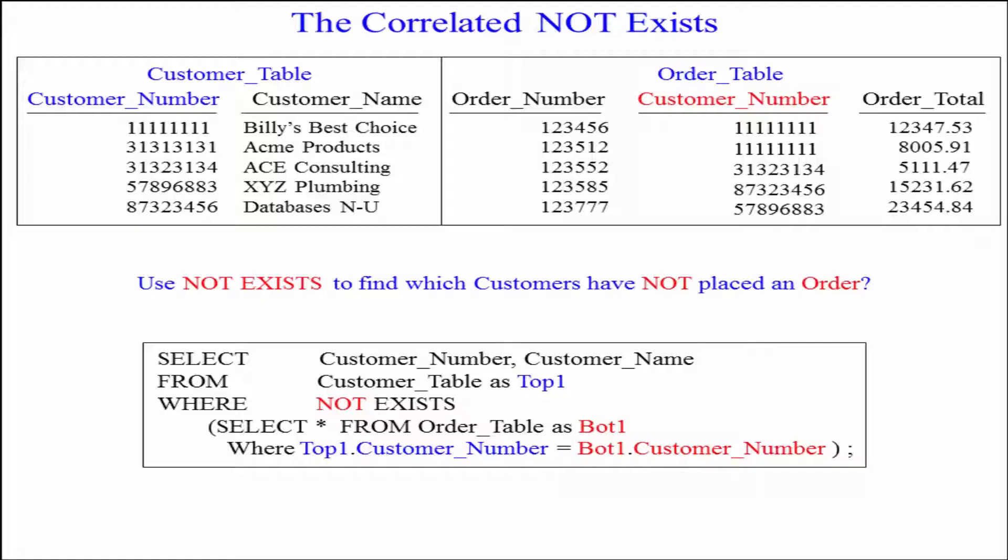So, take a look at this query. We're going to select the columns from the customer table as top one. We alias it.